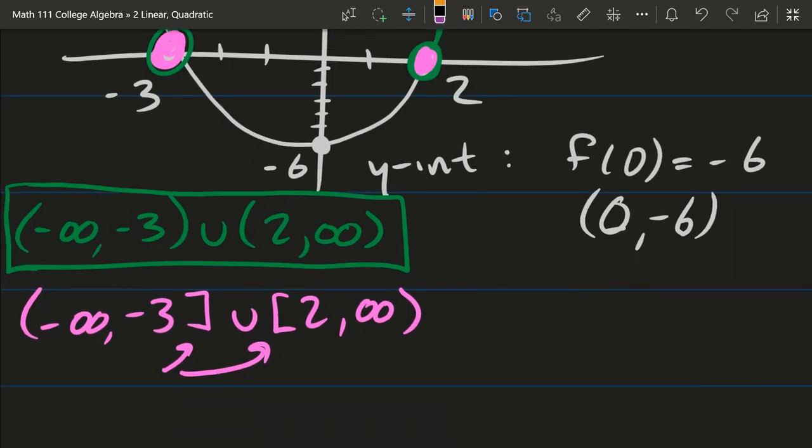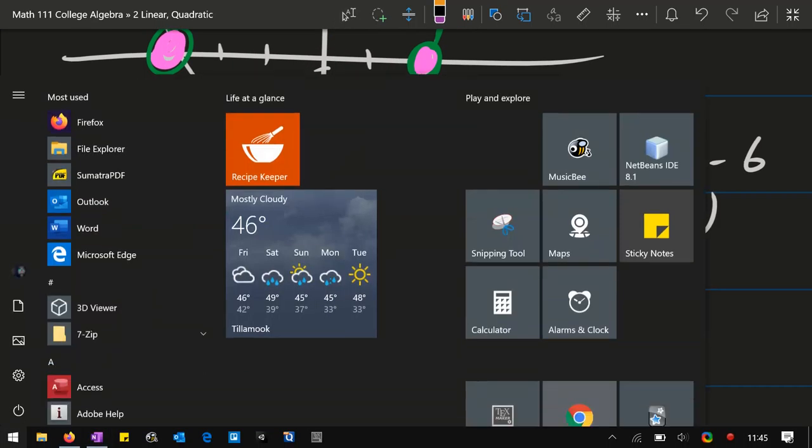And the answer would change slightly. Still going negative infinity to negative 3, the difference is 3 is now okay. Positive 2 is also okay. So if you have a less than or equal to, or greater than or equal to, you're going to include the end values on your interval. You, of course, never include infinity and negative infinity.